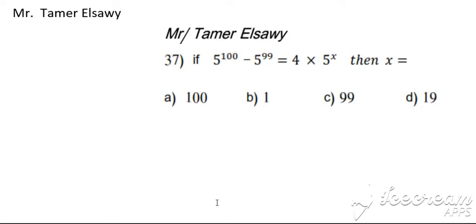5 power of 100 minus 5 power of 99, we can use the GCF. The greatest common factor is 5 power, the lowest power. 100 or 99? 99, okay.